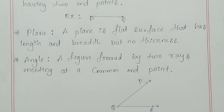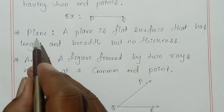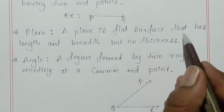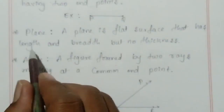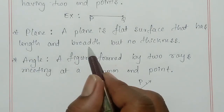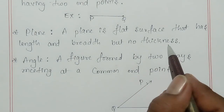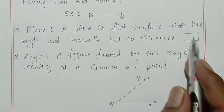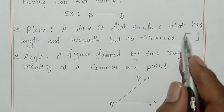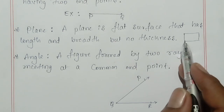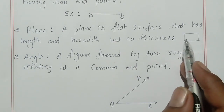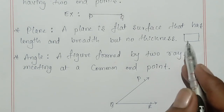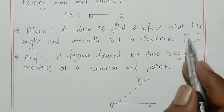Next is plane. A plane is a flat surface that has length and breadth but no thickness. For example, this is the plane — it does not contain any thickness, but it has length and breadth. So this is said to be a plane.